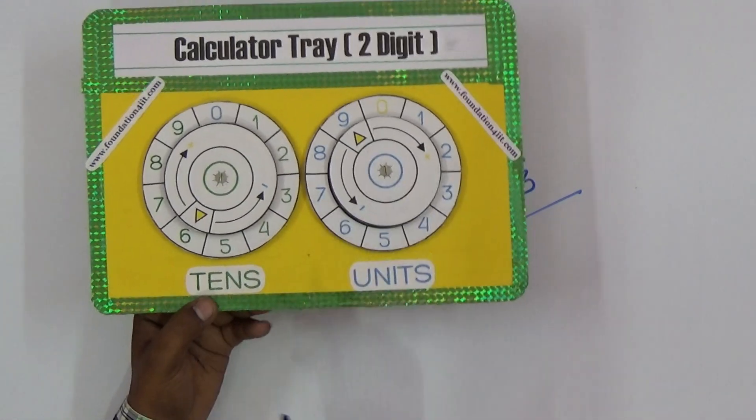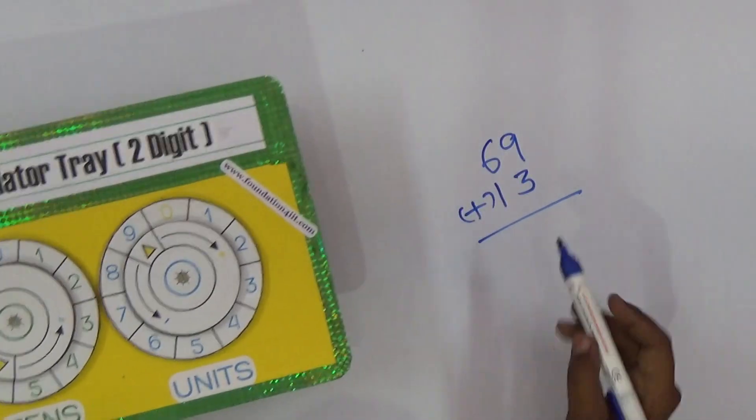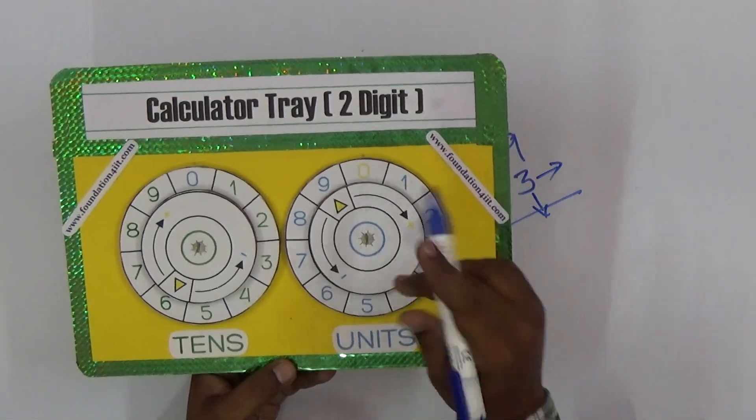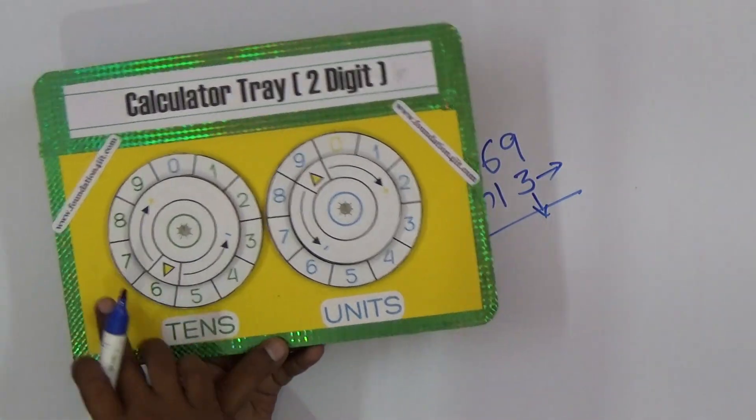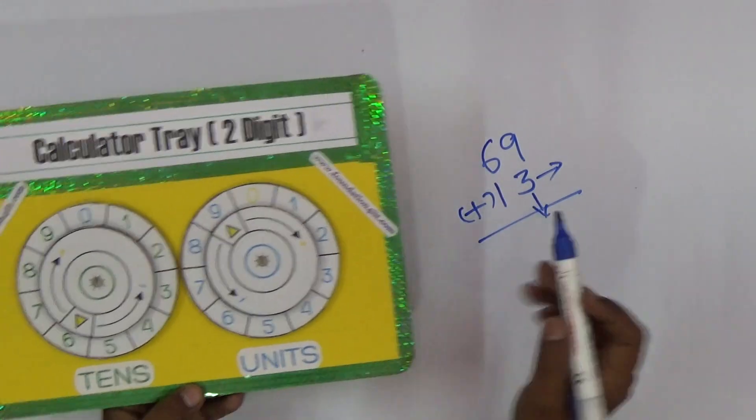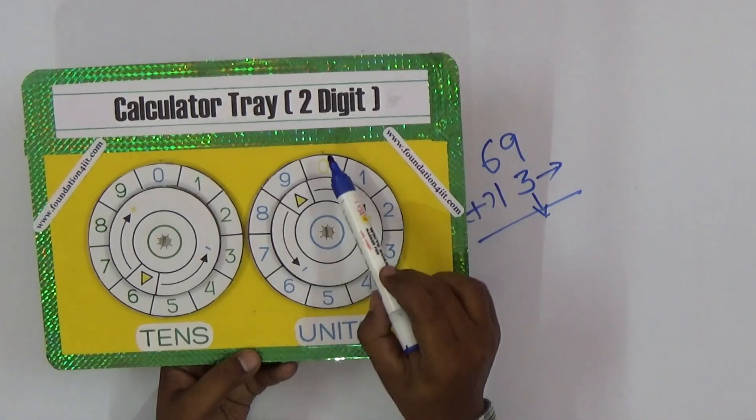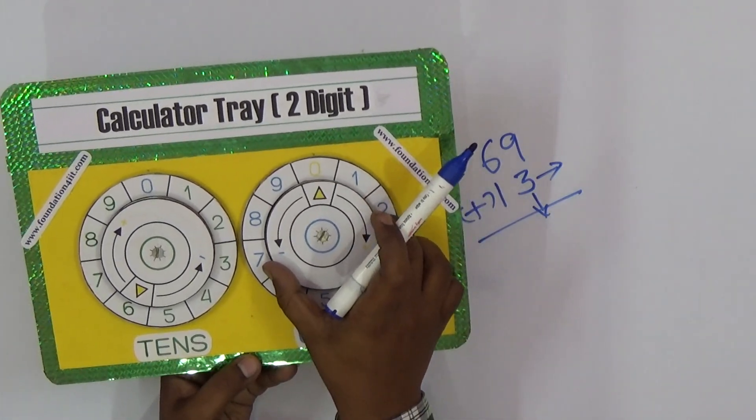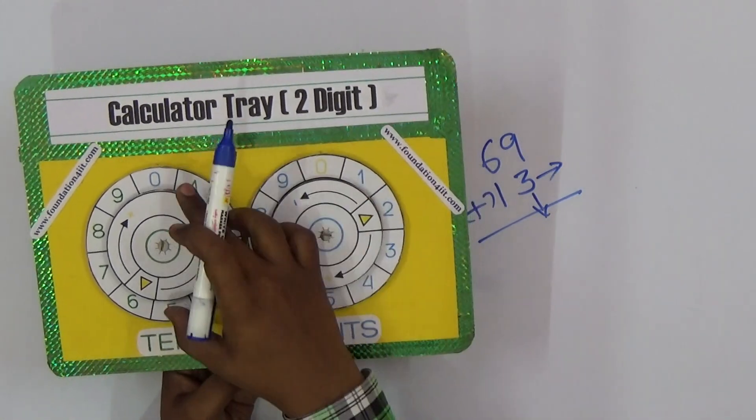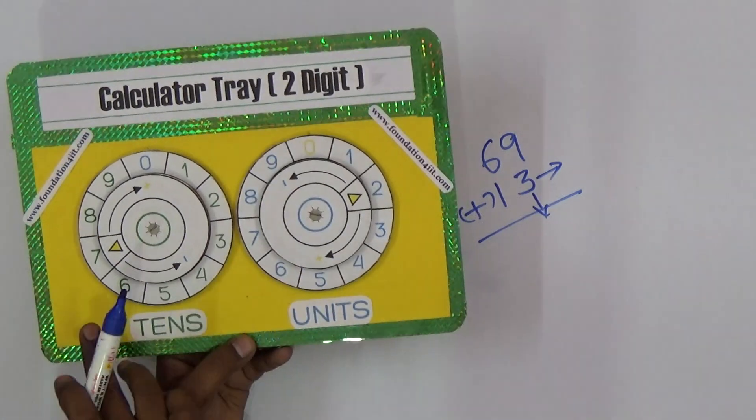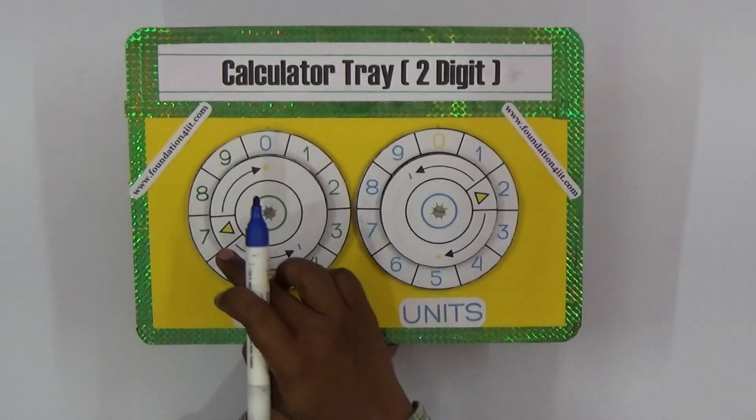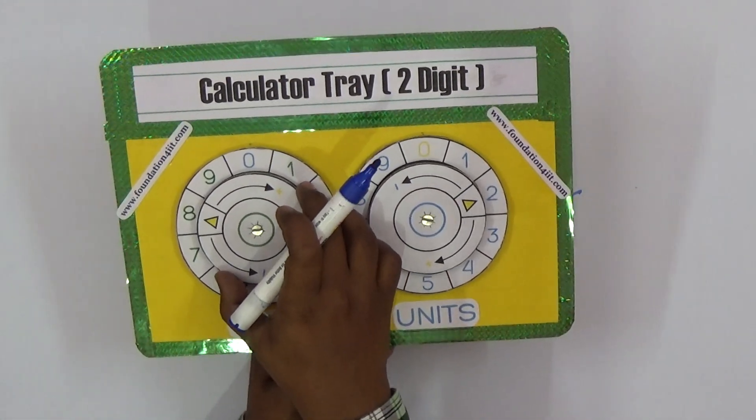Now for 13, units place is 3. Whenever you come to 0, you should extend this more - that is important. Whenever you cross the 0, you should increase this. Now it's 3, this is at 9, so 1, 2, 3. But it's already crossed 0, so immediately increase this tens place first. Tens place is 1, now just make it to next position - 8. So 82: here is 8, here is 2.